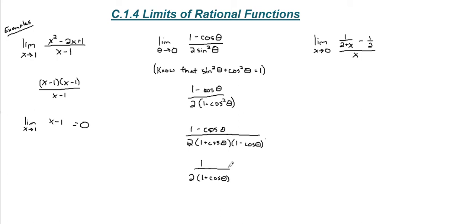And again, the 1 minus cosine theta, the quantity is canceled out here from the top and bottom. I can safely take the limit now as theta approaches 0.